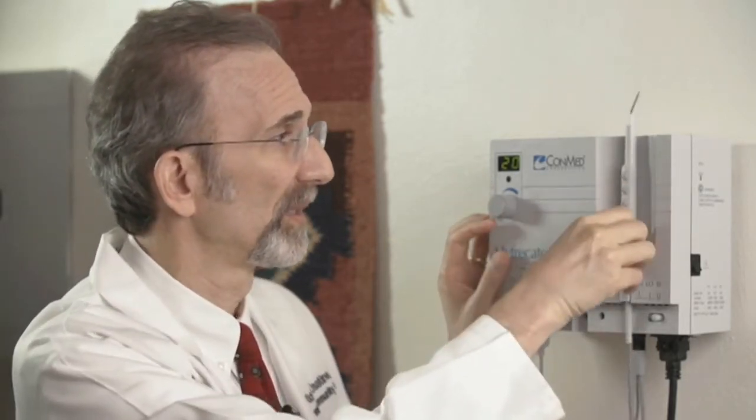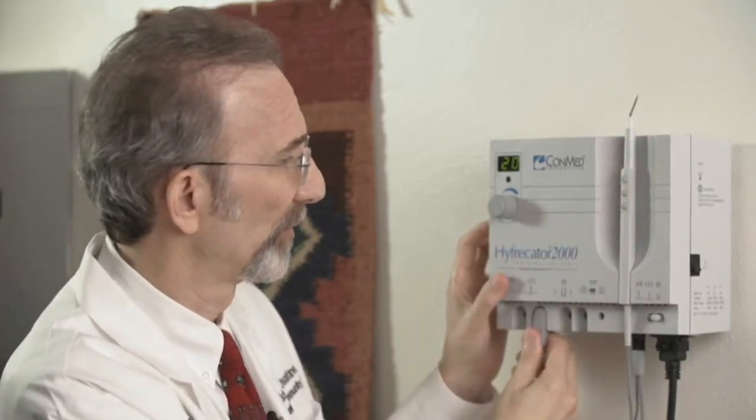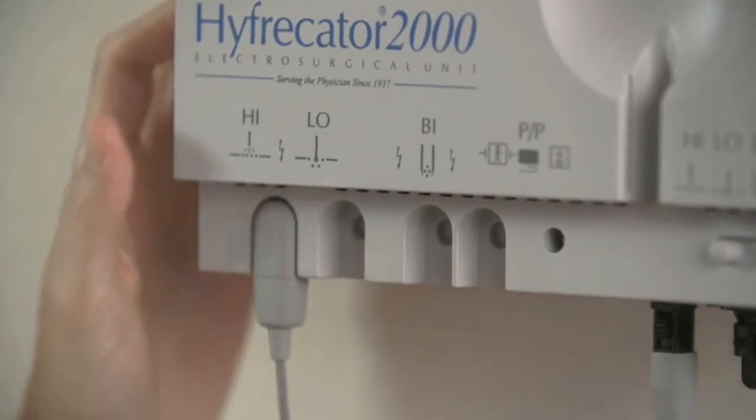Now, if I need more wattage than 20 on low, then what I do is I put the handpiece there, pull this device out of low, push this over to high, push this in, and now I have the ability to use wattage settings all the way up to 35.